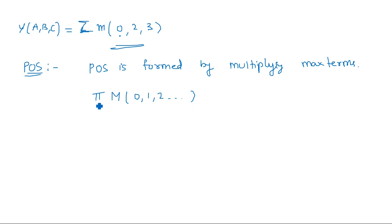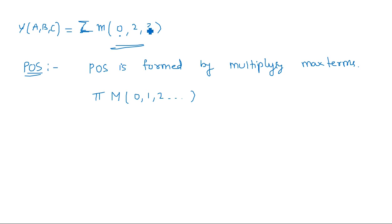Pi means product, summation means sum. For SOP and POS applied to our example: we had min terms at positions 0, 2, 3. For three variables, there are 2³ = 8 total combinations. Out of 8, three are min terms, and the remaining five are max terms. Wherever you have 0s in the output, those correspond to max terms.